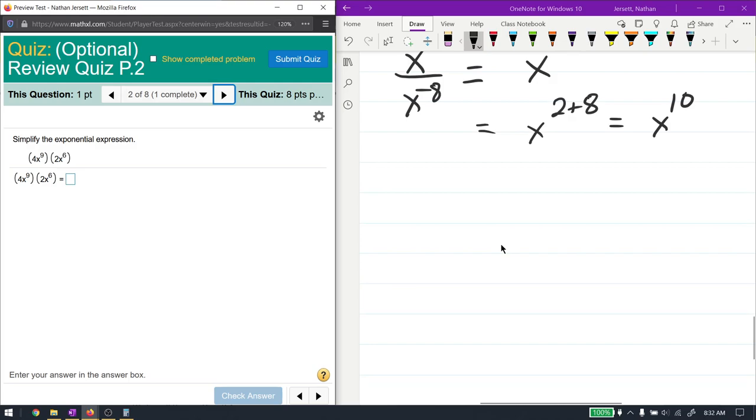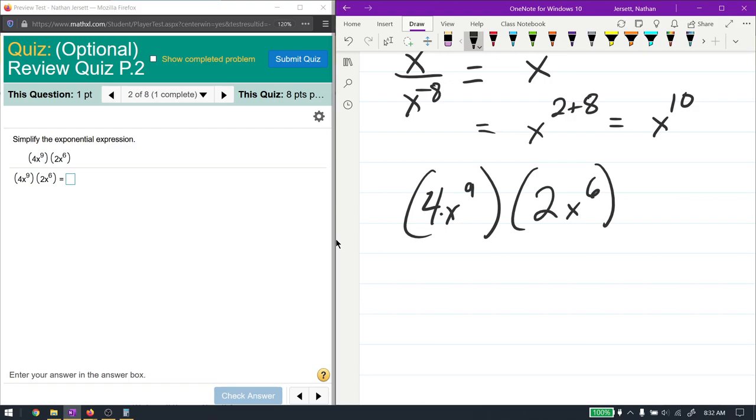Here we have two things that are multiplying, and I'm going to simplify this thing a little bit by writing the common things next to each other. Everything in here is multiplying, so I can rearrange this as much as I'd like. I can drop the parentheses because they don't actually mean anything here. So I'm going to write it as 4 times 2 times x to the 9 times x to the 6.